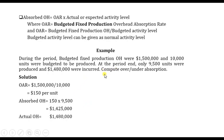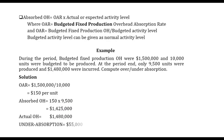Actual overheads were $1.48 million. Comparing the two: we have already included $1,425,000, but we should have included $1,480,000 — meaning we included less than we should have. Therefore, there is an under-absorption. The difference is $55,000, so there is an under-absorption of $55,000. Thanks for watching, and until next time.